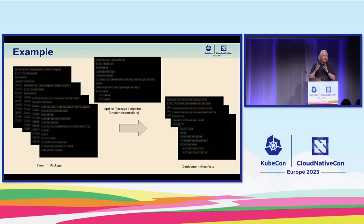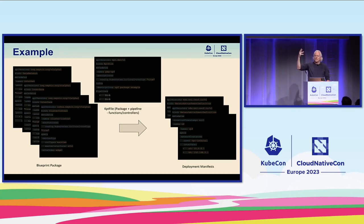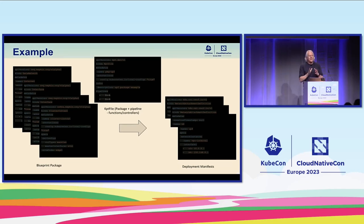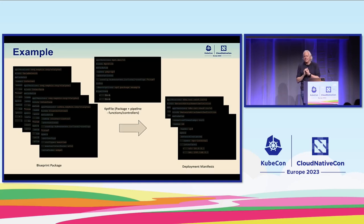Part of the package is a Kpt file — we use Kpt and Porch, which is configuration as data. The Kpt file contains the pipeline of functions and controllers used for specialization. Once that pipeline has run, you still have the original manifests plus new KRM resources generated by the specialization phase — for example, a new network attachment definition because we're using Multus. It's a very generic approach: it can generate net-new resources or mutate existing ones.